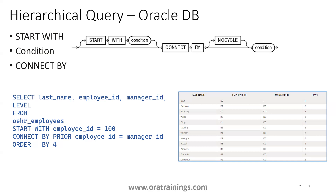If you observe the result snapshot, the first top-level manager is King. Under King, we have a number of employees, and under those respective employees, there are some other employees as well.